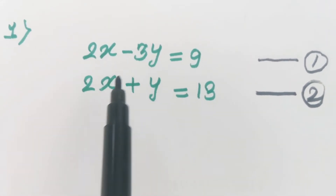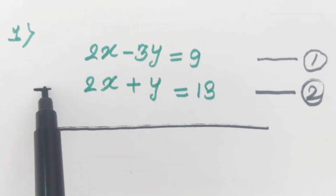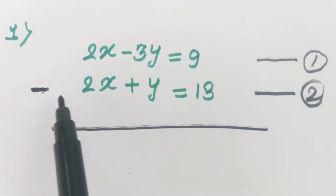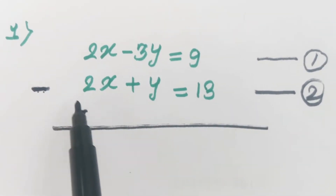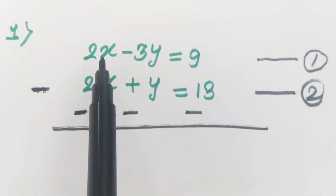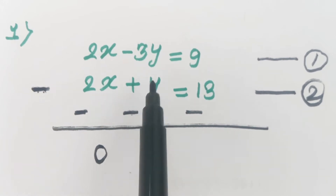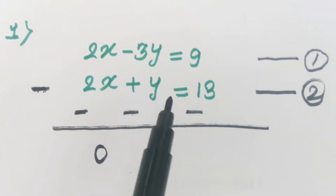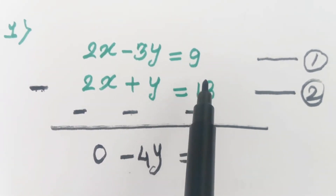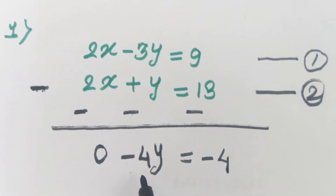We simply add or subtract equation 1 and equation 2. If we subtract, the minus sign is multiplied to the complete second equation. So we get: minus into plus is minus, and minus into minus is plus. Now subtracting: 2x minus 2x is 0. Then minus 3y minus y — the new sign is minus — so minus 3y minus y gives minus 4y, and 9 minus 13 gives minus 4. So the result is minus 4y equals minus 4.